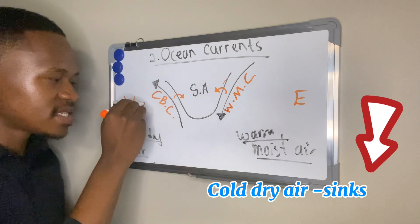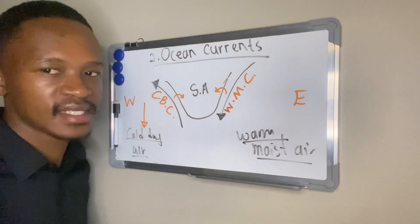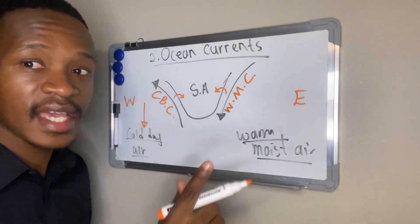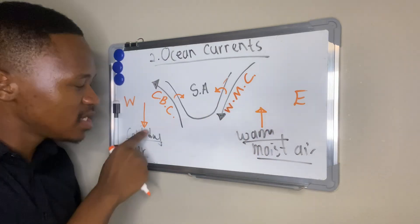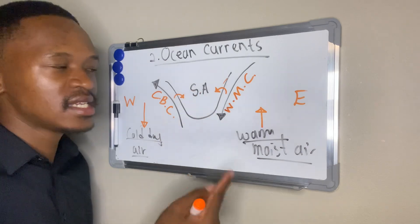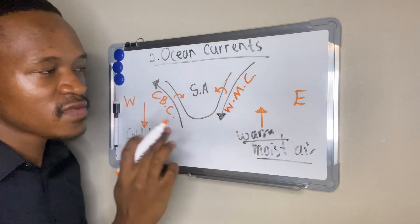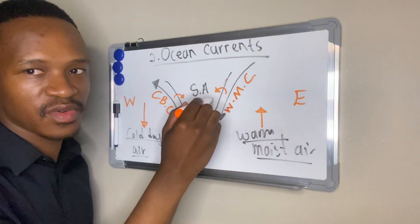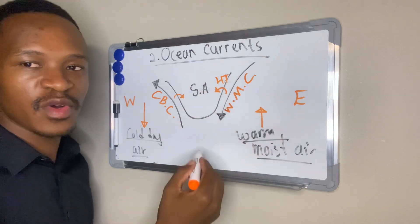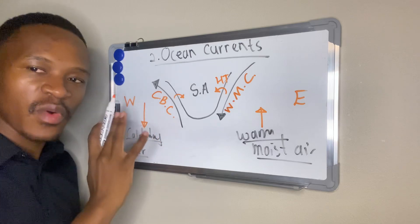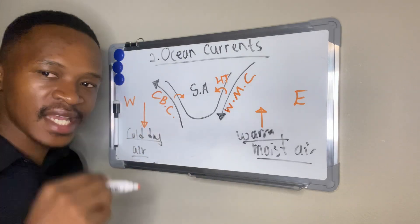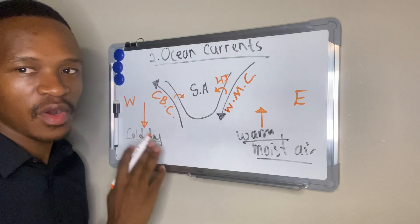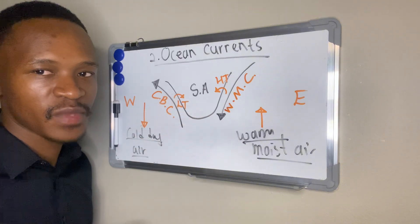Cold, dry air sinks — it subsides or descends because it is heavy and dense. Warm, moist air is light, hence it rises. On the east coast of South Africa, the warm Mozambique current, which originates at the equator, brings warm, moist air, so we will have high temperatures on the east coast. On the west coast, the cold Benguela current originates at the poles and brings cold, dry air, so we will have low temperatures on the west coast.